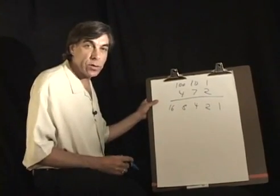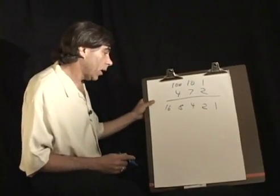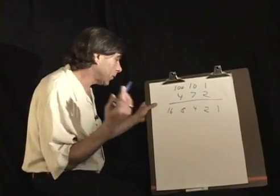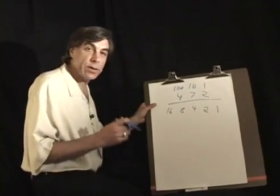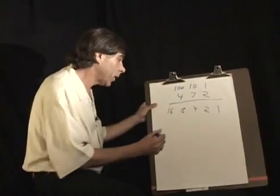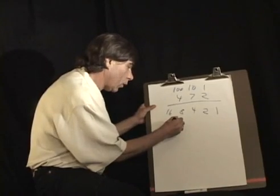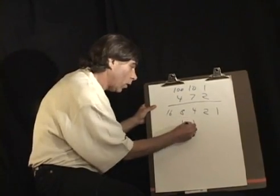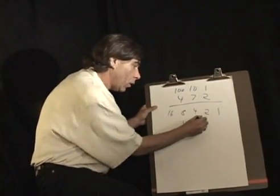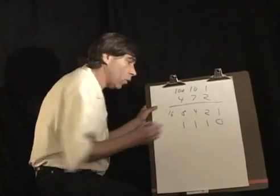So if a computer wants to represent the number 14, it's one 8, one 4, that's 12, one 2, and no 1s.